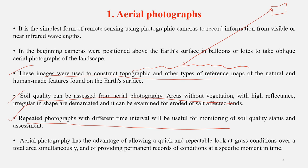Repeated photographs taken at different time intervals are very useful for monitoring soil quality and its assessment, because if you take pictures of the same location at different time intervals, you can understand how changes in the soil are taking place over time. Aerial photography also has the advantage of allowing a quick and repeatable look at ground conditions of an area, and it provides permanent records of conditions of a specific area. This technique, though simple in nature, is very handy when assessing soil quality and conditions.